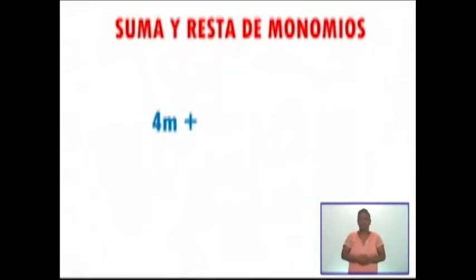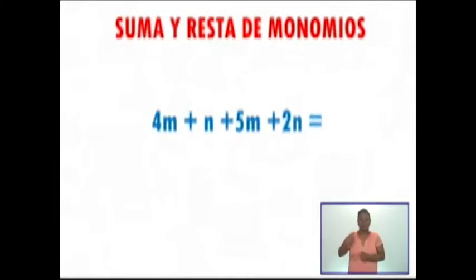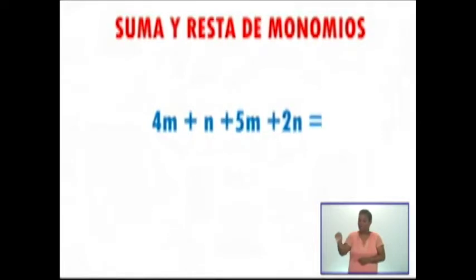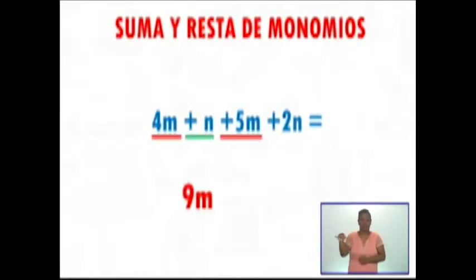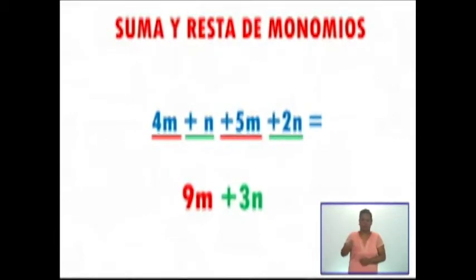Aquí tengo 4m más n más 5m más 2n. Recuerda que solo podemos sumar los términos semejantes, o sea, las m con las m y las n con las n. Empiezo en orden alfabético; primero la m. 4m más 5m son 9m. Y una n más 2n son 3n. Por lo tanto, nuestro resultado final es 9m más 3n.